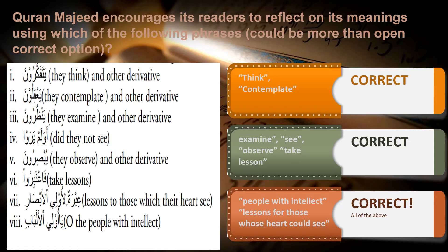The specific words used in the Quran include: yatafakkaroon (they think), ya'qiloon (contemplation), yanzuroon (examination), awa lam yaraw (did they not see), yubsiroon (observation), fa'tabiru (taking lessons), ibratan li ulil absar (lessons to those whose hearts can see), and ya ulil al-bab. The key message is that the Quran encourages its readers to reflect as they go through this divine book.